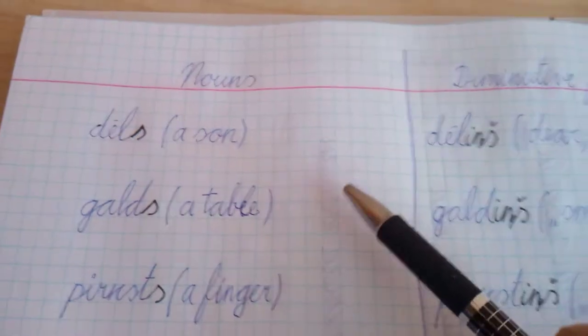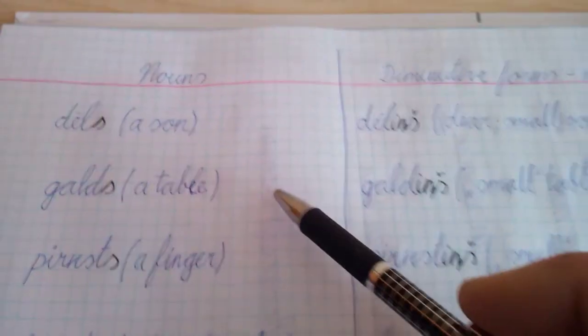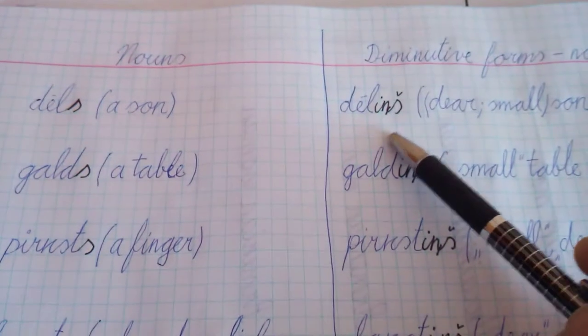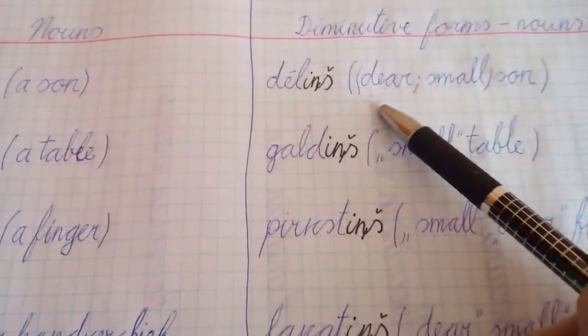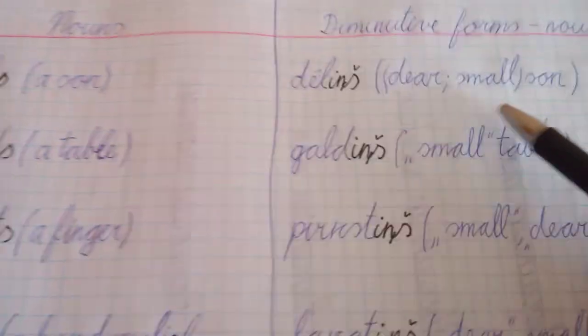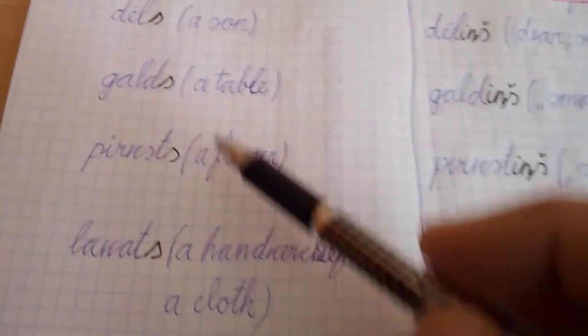For example, nouns and diminutive forms. In English there doesn't exist such a soft noun as dēls, a son. Dēliņš means like dear small son. Galds, galdiņš - small table. Galds is the table.